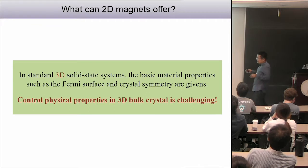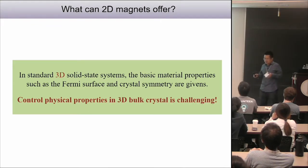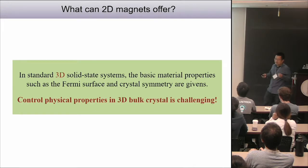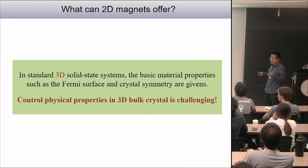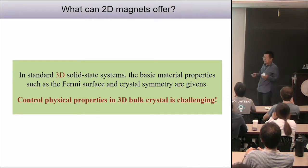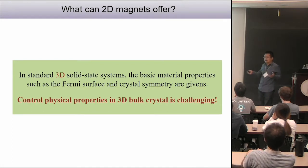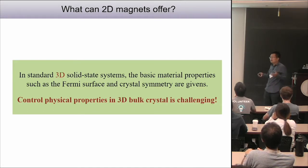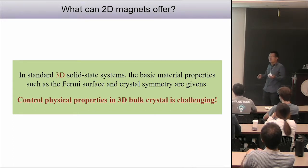From a fundamental physics point of view, magnetism has been studied for a long time, but why go two-dimensional? My motivation is that in any three-dimensional solid-state system, basic material properties such as crystal symmetries are given. But for condensed matter, if you want to understand or control phase transitions between different electronic phases, what we'd like to do is control the phase in situ — tune one phase to another, control the Fermi level or crystal symmetries. This can be done in a bulk crystal, but it's challenging.